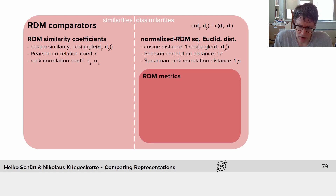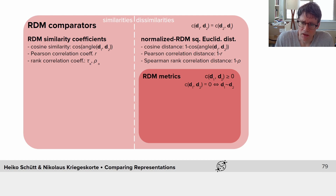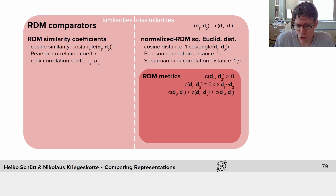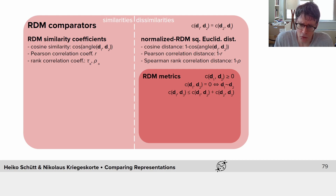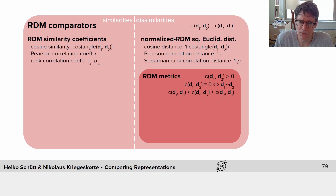However, these are not metrics. For metrics, we have four requirements: not just symmetry, but also non-negativity; it must be zero if and only if the two RDMs are considered identical; and the triangle inequality must hold. The triangle inequality says that going from D1 to D3 via D2 cannot be shorter than going directly from D1 to D3 — detours cannot be shortcuts. This also implies that if two things are close to a third thing, they must be close to each other — a useful property for machine learning. We can convert these dissimilarities into metrics simply by taking the square root, giving the normalized RDM Euclidean distance.